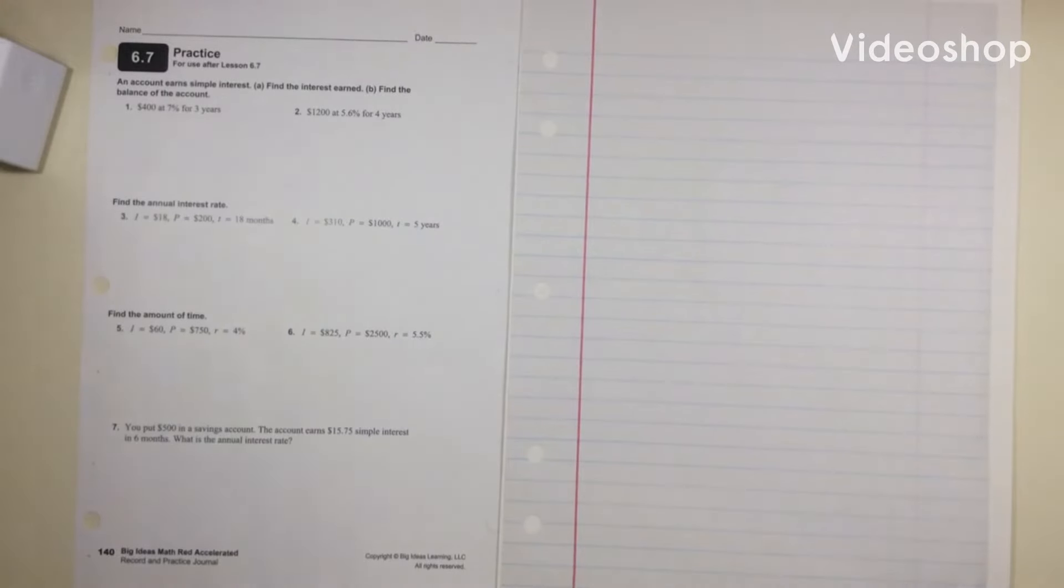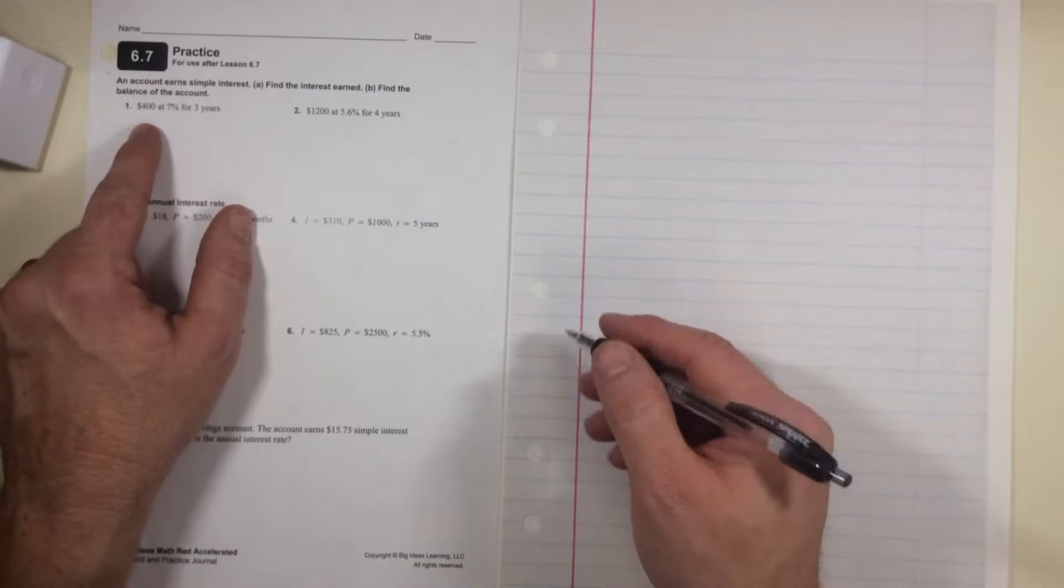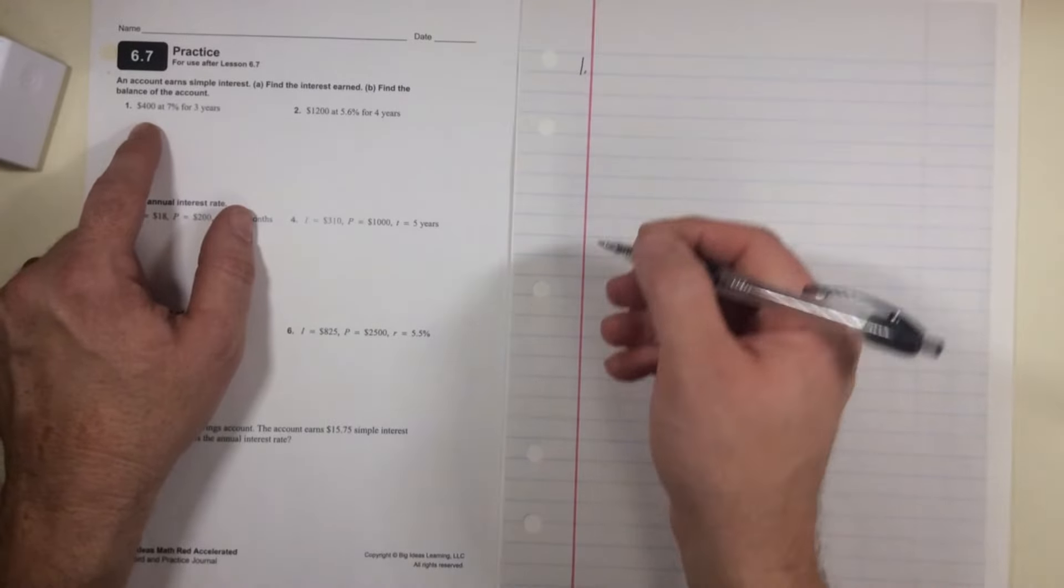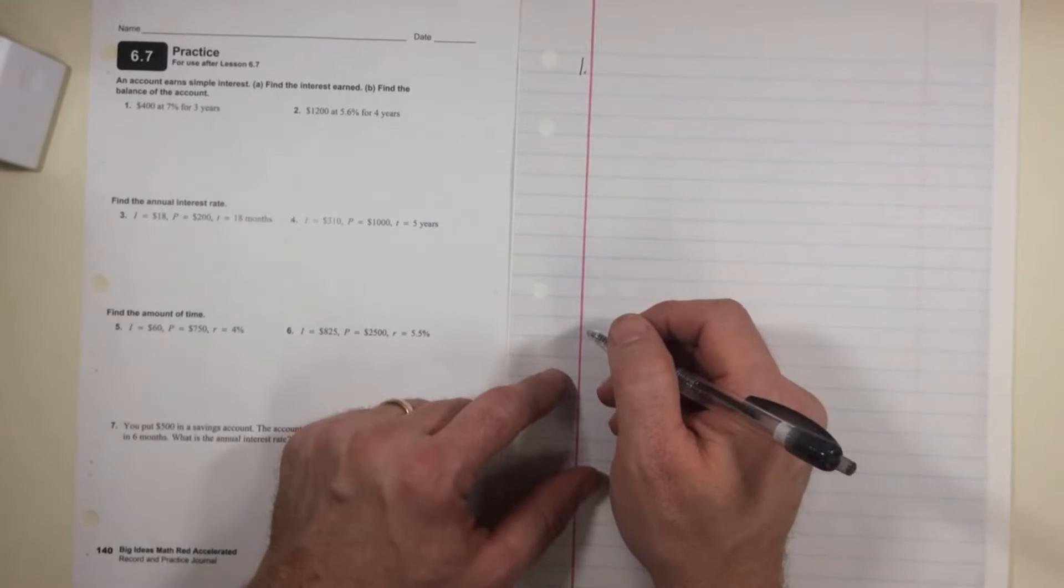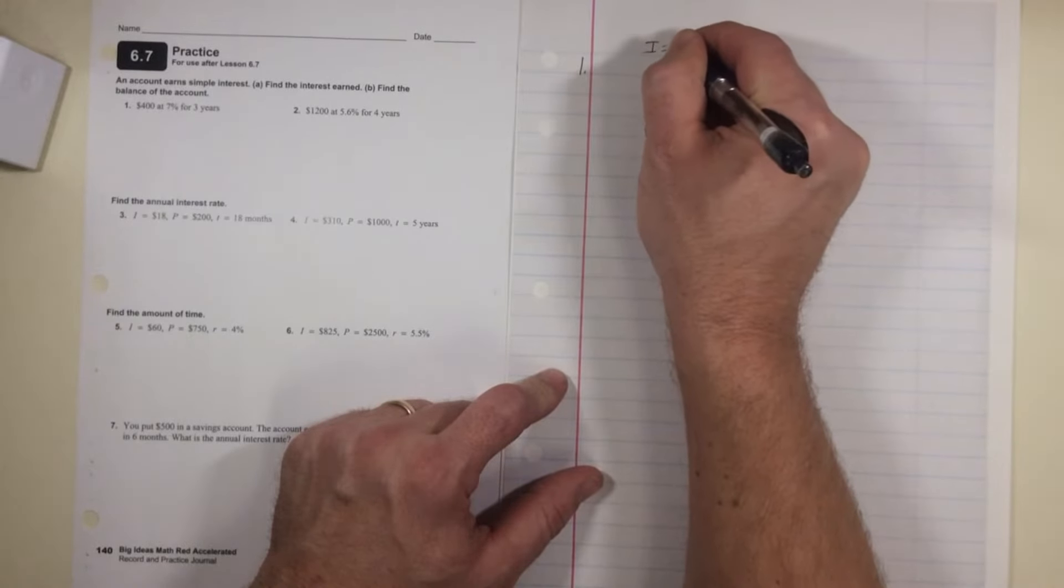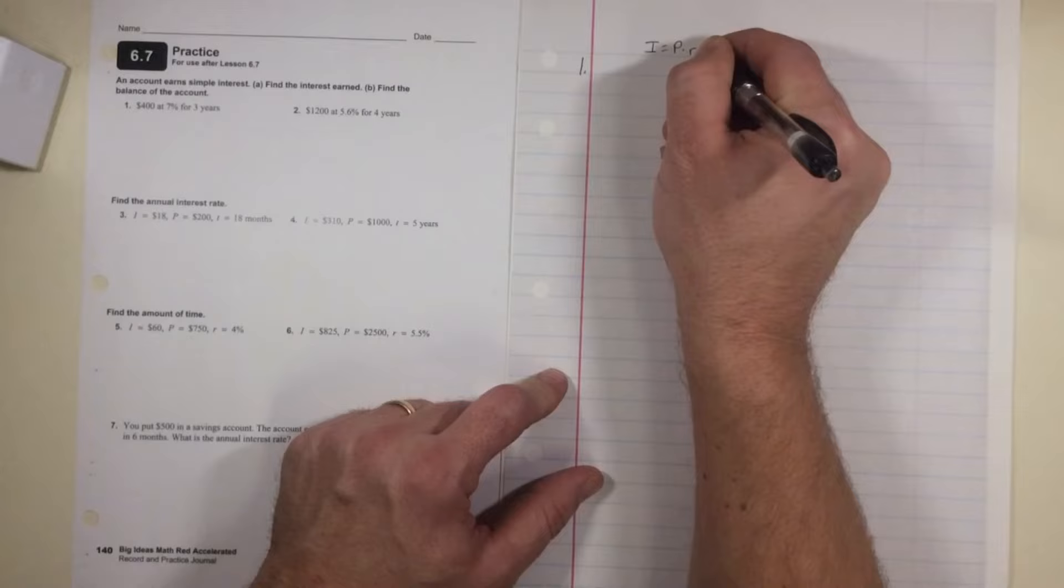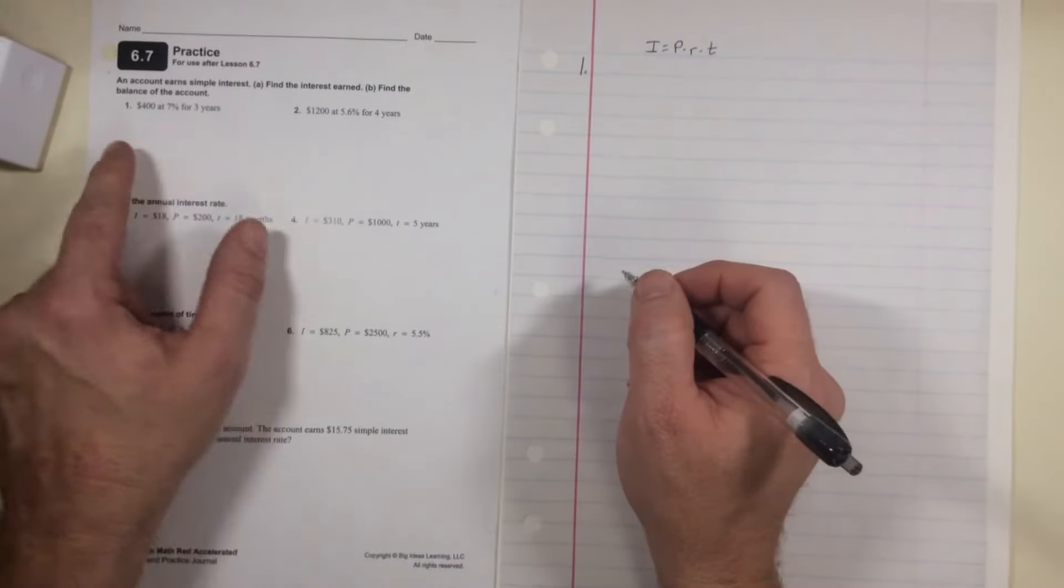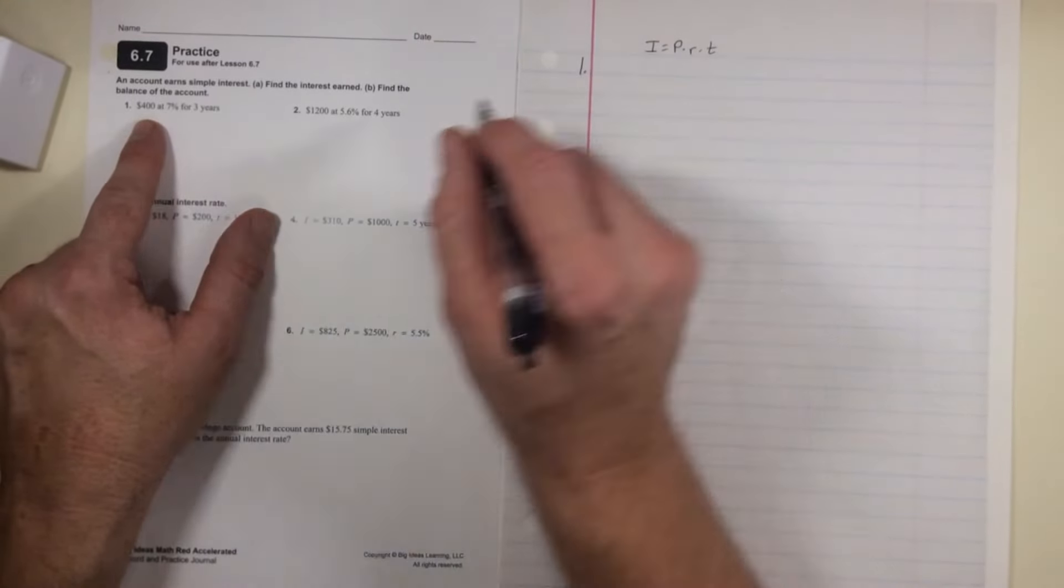This is journal page 140, section 6.7, simple interest, number one. Actually, before we do this, remember that the simple interest formula is interest equals principle times rate times time. So for number one, they give us, we're looking for the interest.